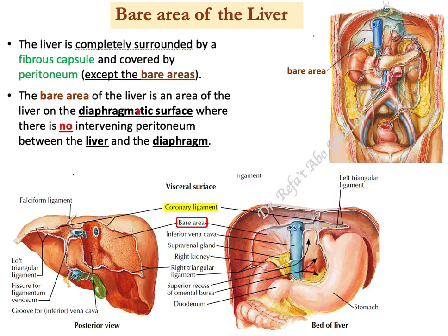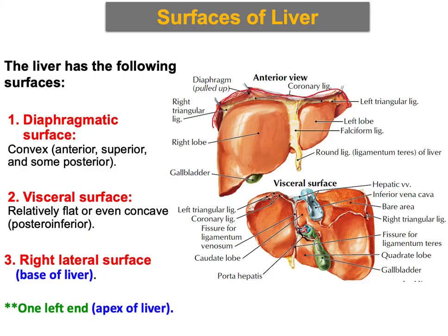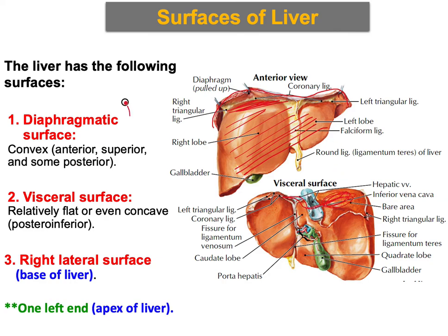Welcome everyone. In this tutorial video I'm going to talk to you about the bare area of the liver. Before starting, let me give you a quick review about the surfaces of the liver. There is another video about the surfaces of the liver but I'm going to summarize it for you. There are three surfaces for the liver. There is the diaphragmatic surface — the anterior part, superior part, and a little bit of the posterior part.